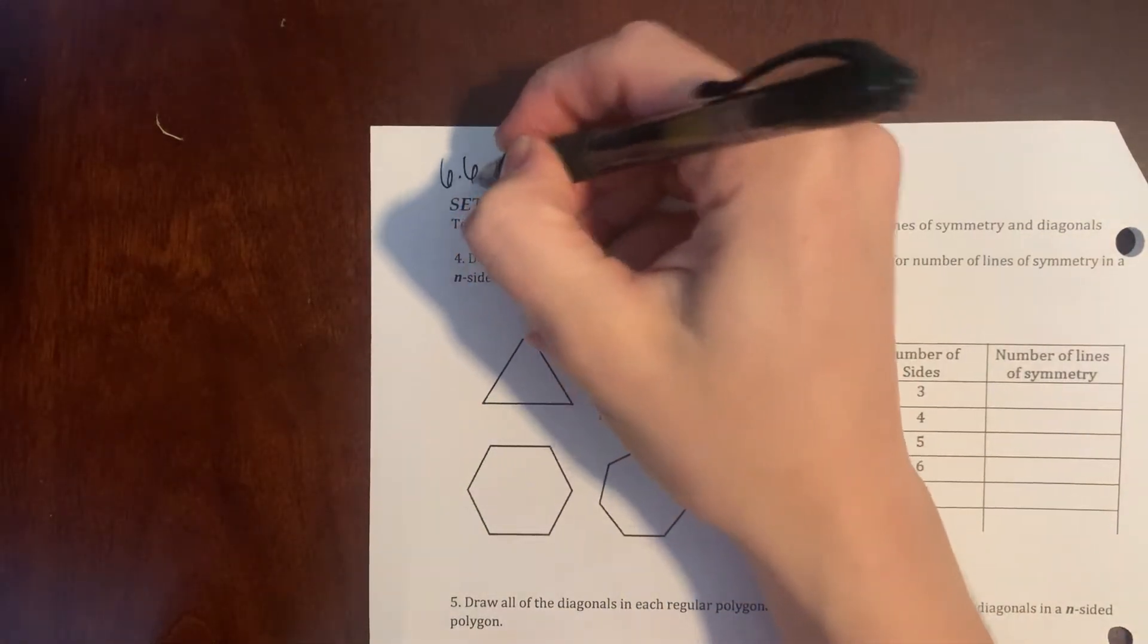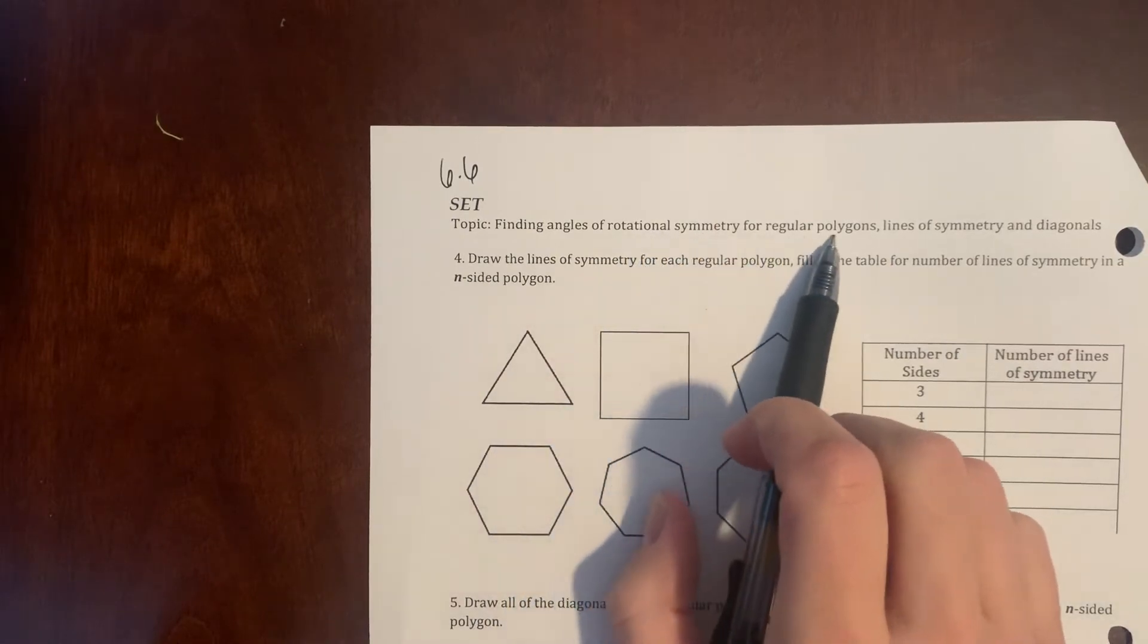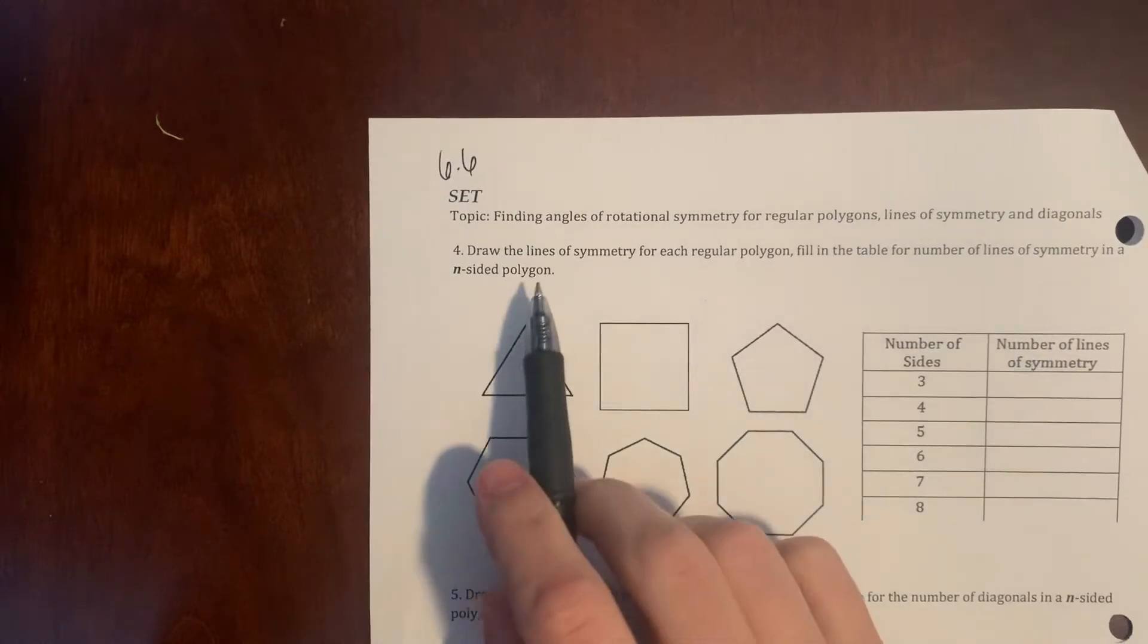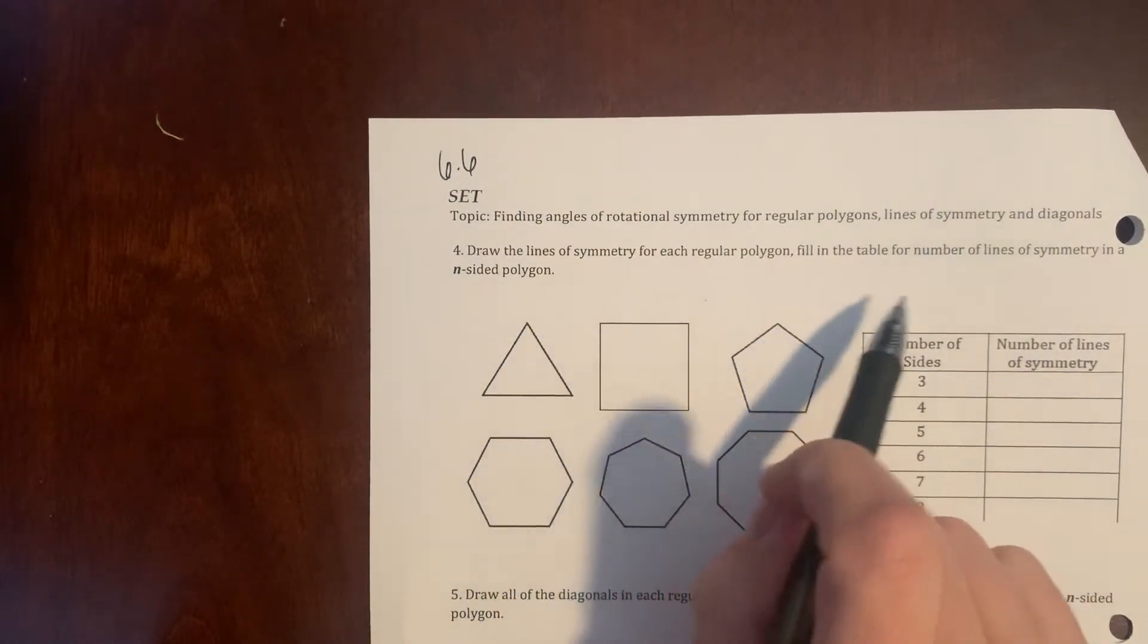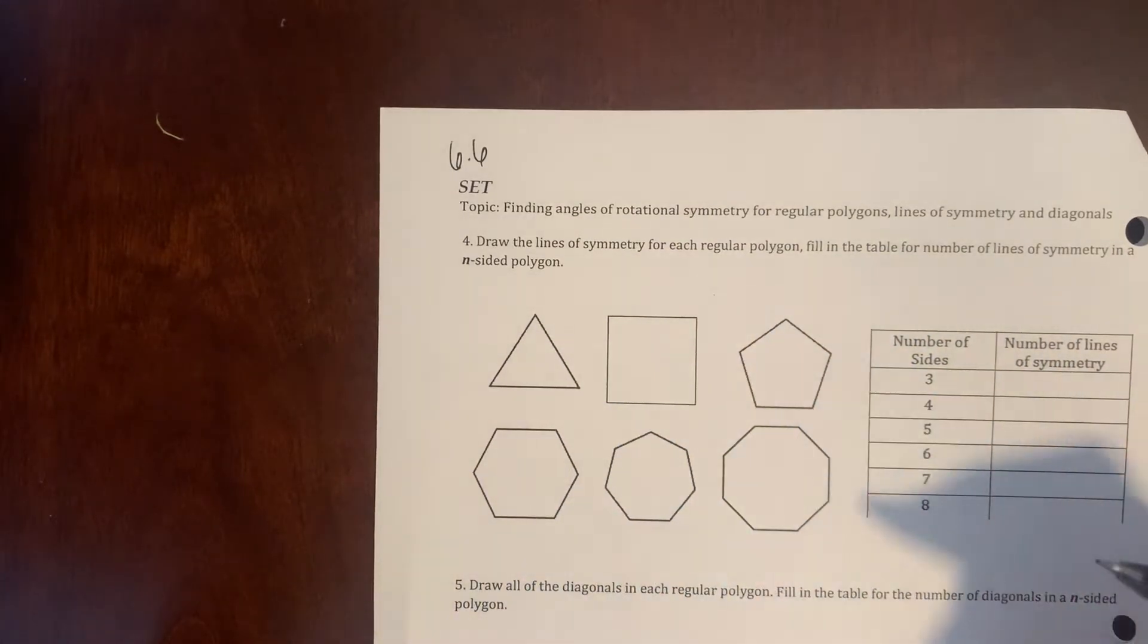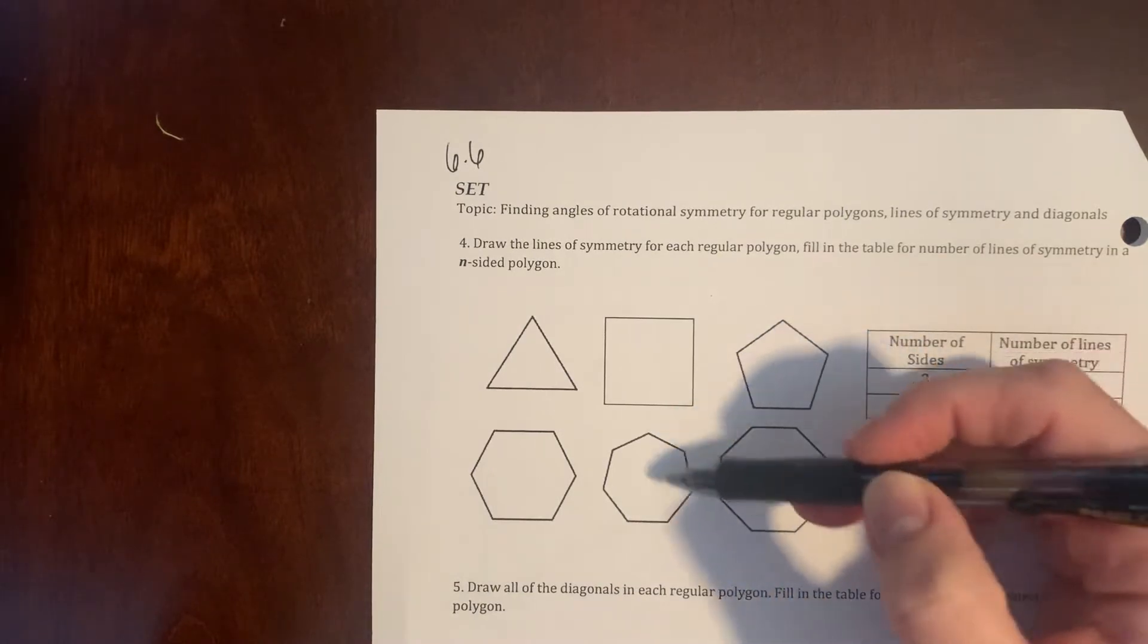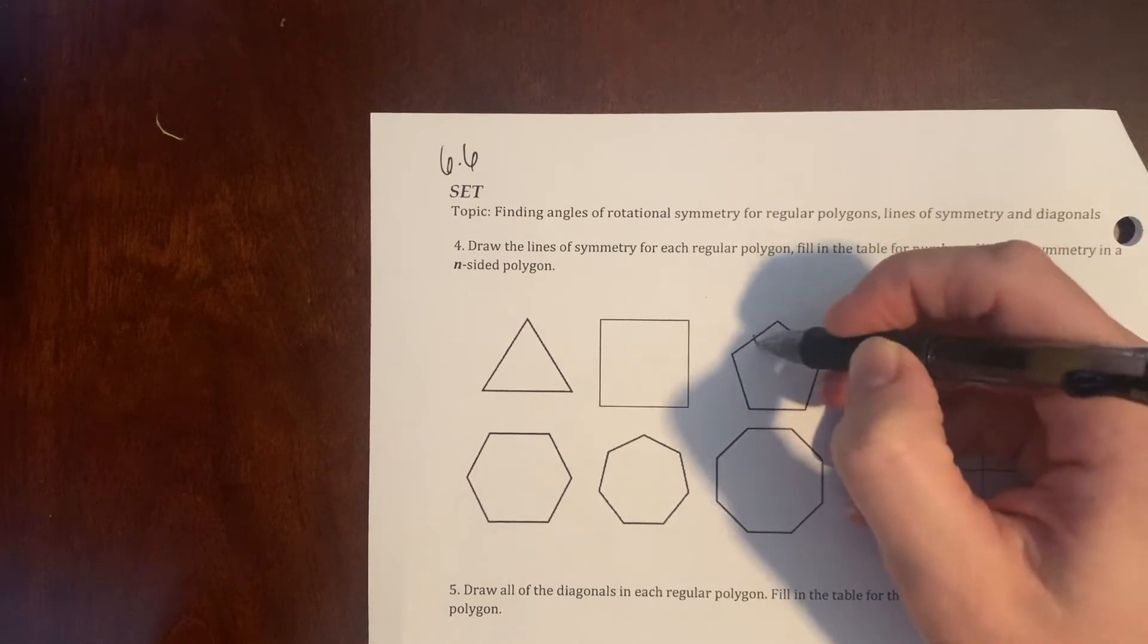So this is 6.6, finding angles of rotational symmetry for regular polygons and lines of symmetry and diagonals. Draw the lines of symmetry for each polygon, fill in the table for the number of lines of symmetry in the n-sided polygon. A polygon is when each side length is the same length. So if I look here, these are all equal lengths.